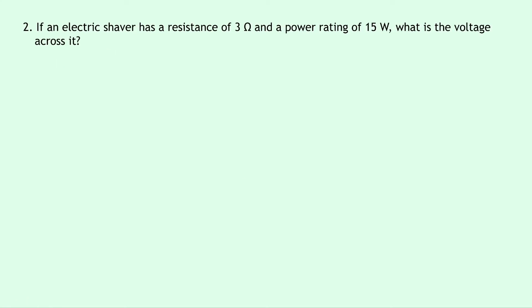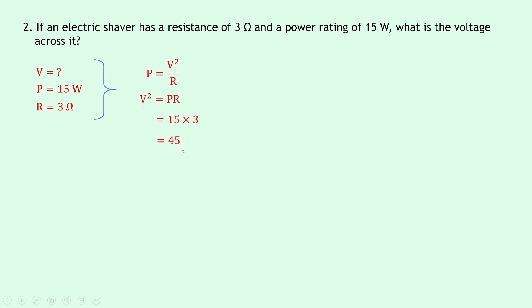Question two says that if an electric shaver has a resistance of 3 ohms and a power rating of 15 watts, what is the voltage across it? Writing down what we know: we're trying to find voltage V, the power P is 15 watts, and the resistance R is 3 ohms. Our equation is P = V²/R. Rearranging for V² by multiplying both sides by R gives V² = PR. Substituting gives 15 × 3 = 45, so V = √45, which gives an answer of 6.7 volts.